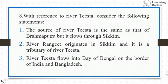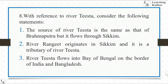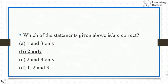With reference to River Teesta, consider the following statements. Statement 1: The source of River Teesta is the same as that of Brahmaputra, but it flows through Sikkim — that is wrong. Statement 2: River Rangit originates in Sikkim and it is a tributary of River Teesta — that is right. Statement 3: River Teesta flows into the Bay of Bengal on the borders of India and Bangladesh — that is wrong. Only the second statement is right, so the answer is B, two only.